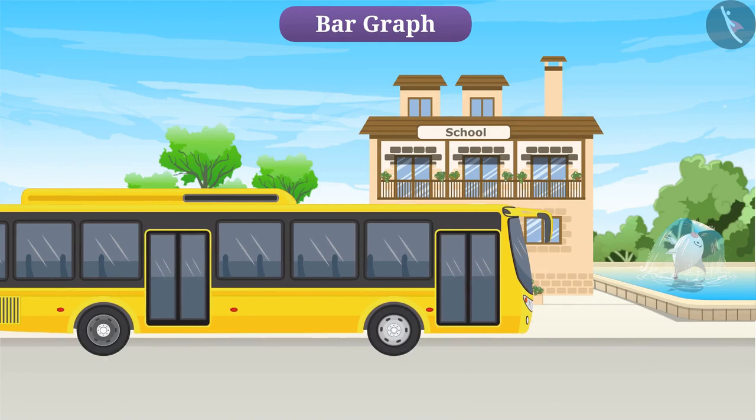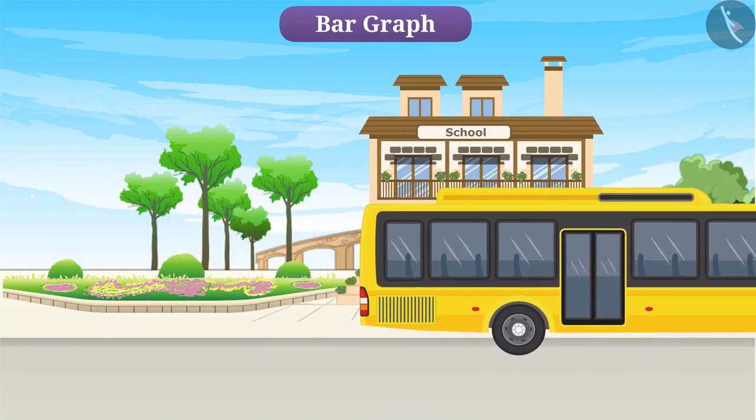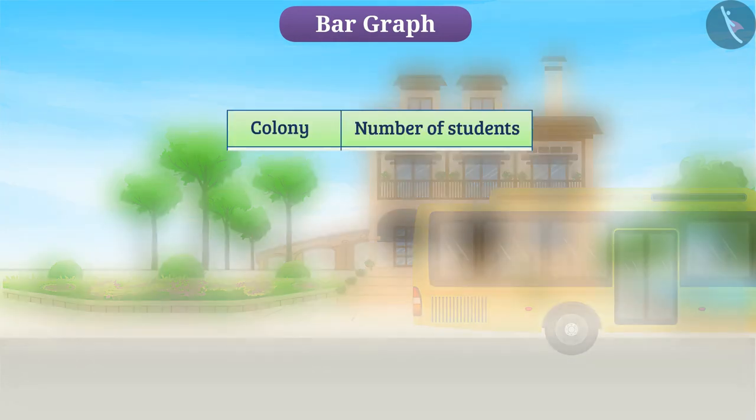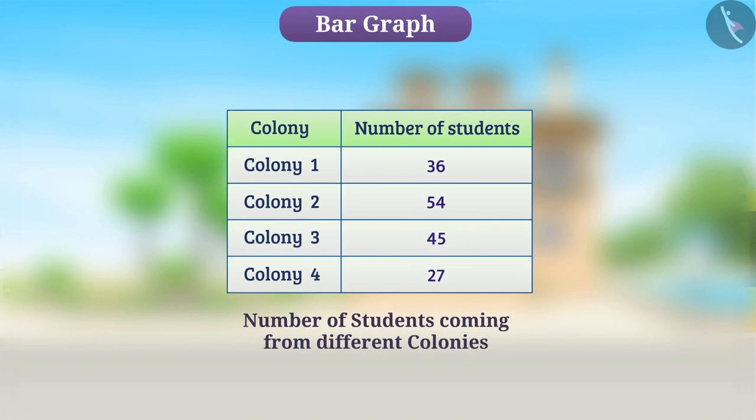The number of students coming from different colonies in a school are shown in the following table. Let us display this data in the form of a bar graph.